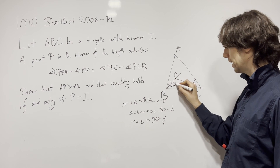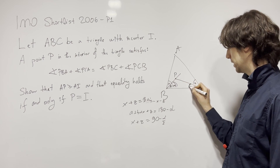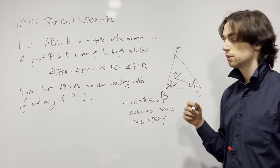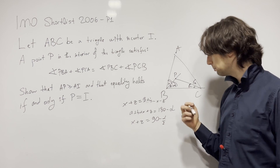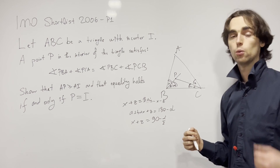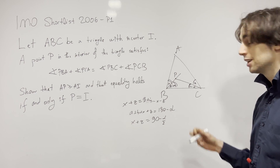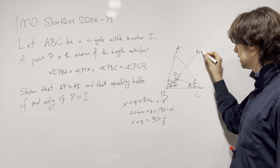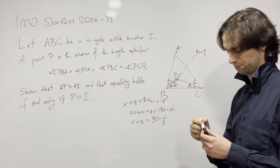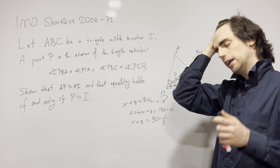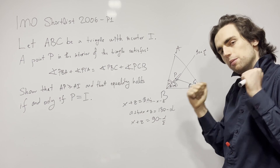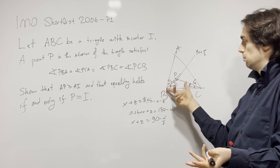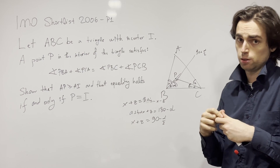So we have that this angle plus this angle — which equals x + z — is equal to 90 − α/2. Now what does that mean? It means that angle BPC is 90 + α/2. I'll pause for five minutes — figure out what it means that angle BPC equals 90 + α/2.